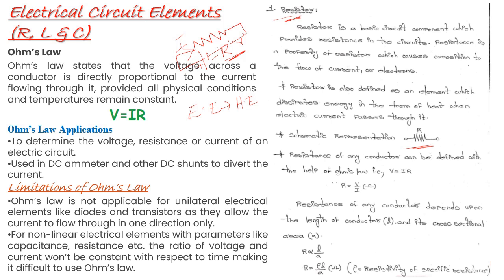We can use ohms, or simply the omega symbol, to denote the value of resistance. Resistance is nothing but the property of the resistor. How is this resistor connected to Ohm's law? Ohm's law is actually the origin to get this R.